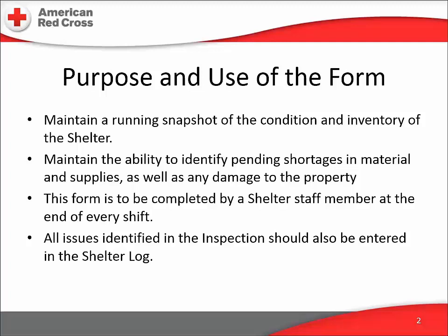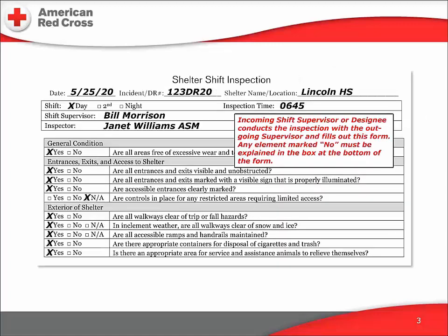A new scratch on the gym floor, outside signs ruined by rain, a broken door handle, a leaky faucet in the ladies' room — it's all relevant to the shift inspection log. This is the top half of the shelter shift inspection form. It begins with the date of the inspection, the number of the disaster response, and the name of the shelter. The top box notes the time of the inspection and the people doing it: the incoming shift, day or night, the time of the inspection, and the two people who conduct it.